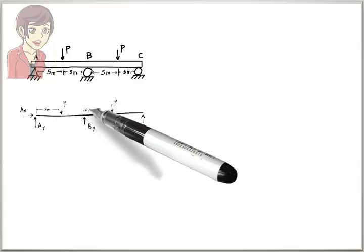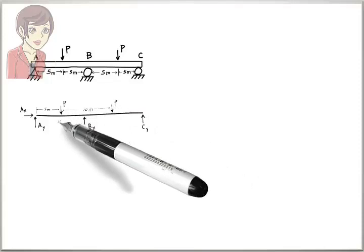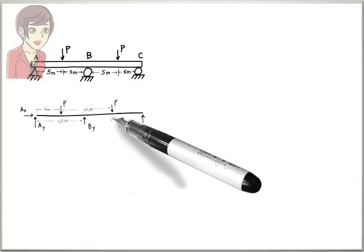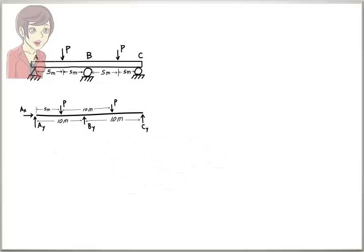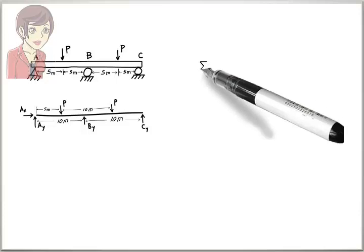Note that the diagram shows four unknown forces. Two support reactions for the pin support, and one reaction for each of the roller supports. Here, the equilibrium equations are Ax equals zero.